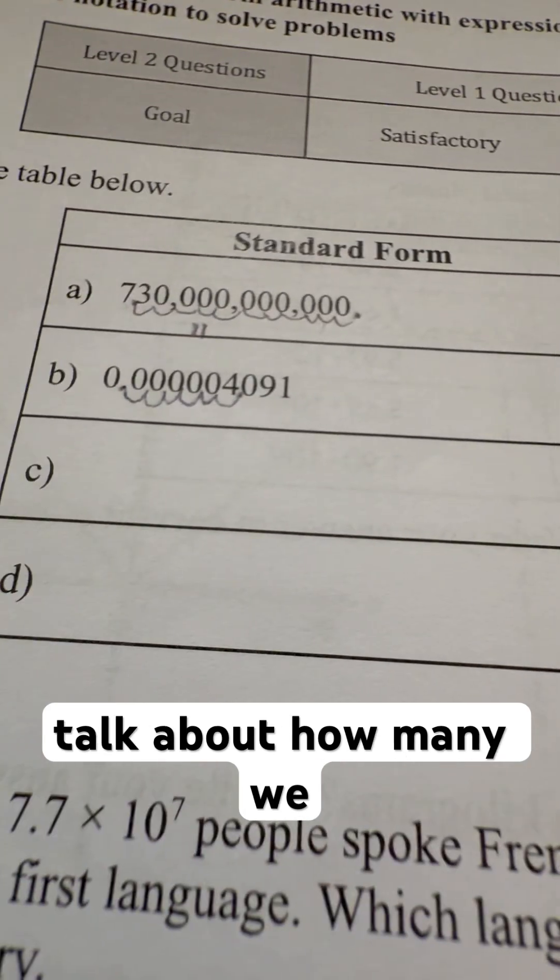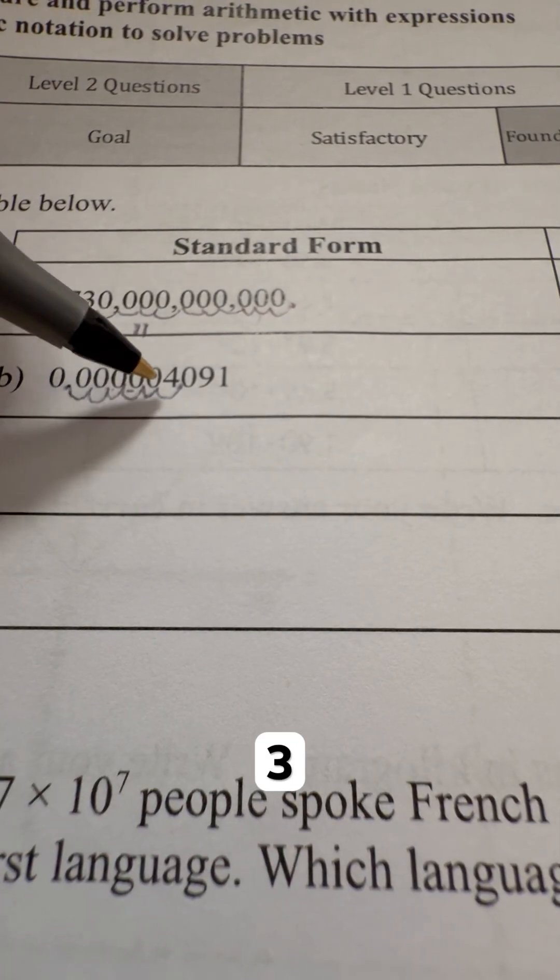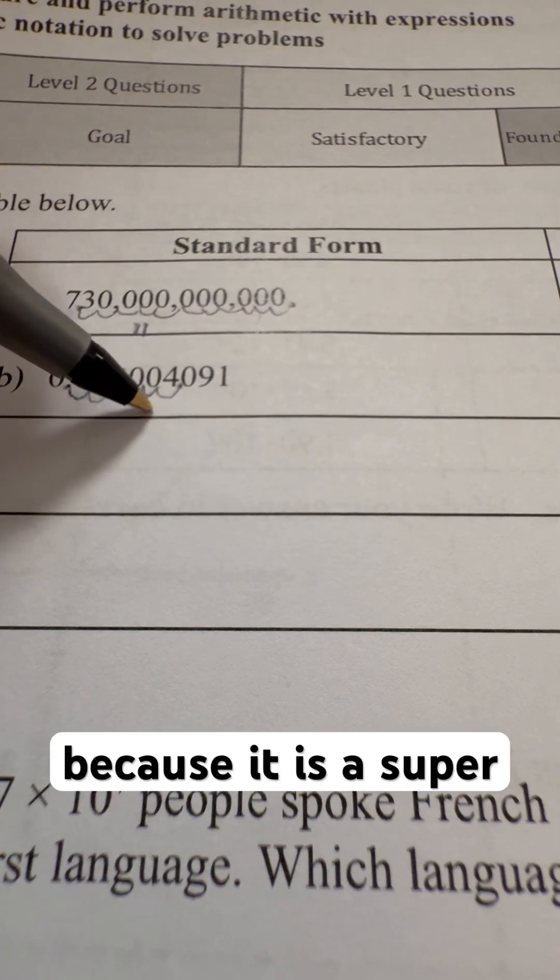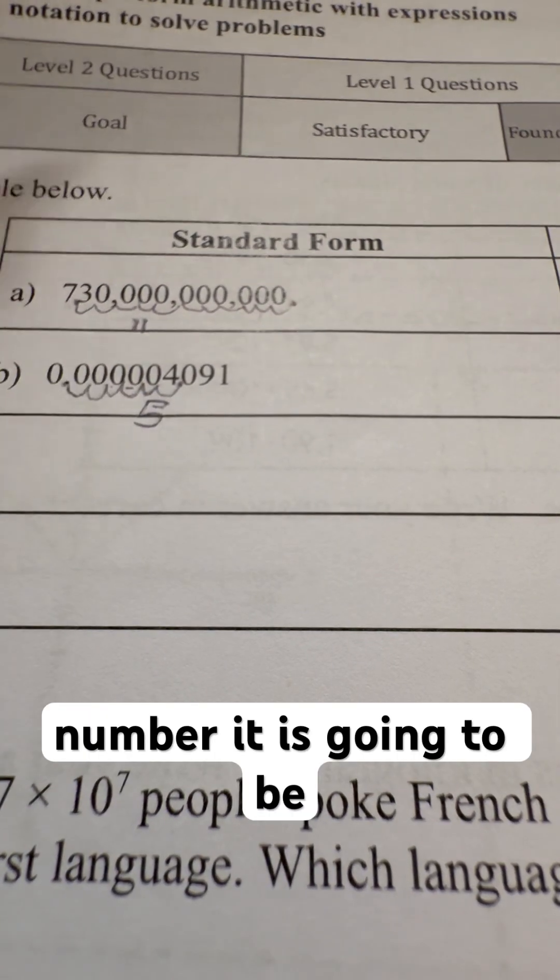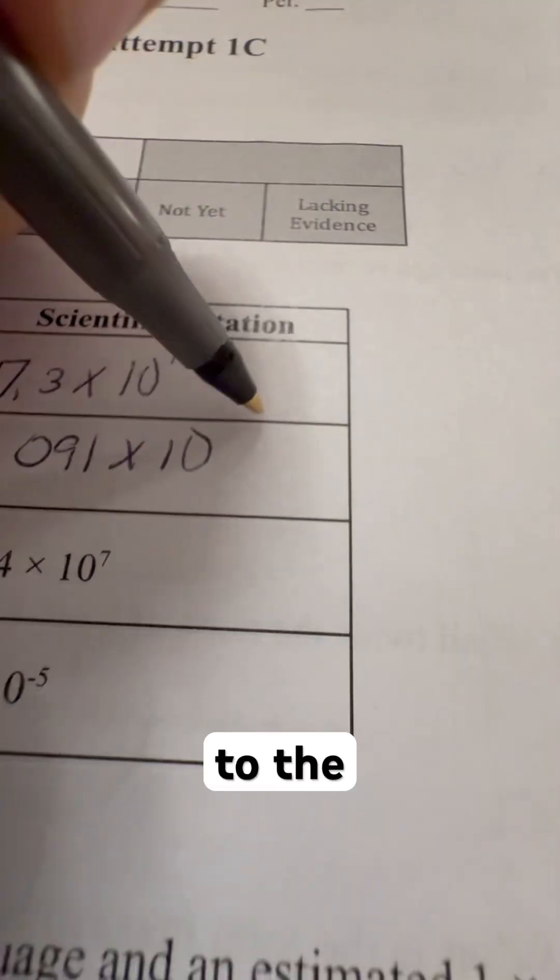And we are going to just talk about how many spots we moved. So again, we move 1, 2, 3, 4, 5. And because it is a super-duper small number, it is going to be a negative number. So we are just going to do times 10 to the negative 5.